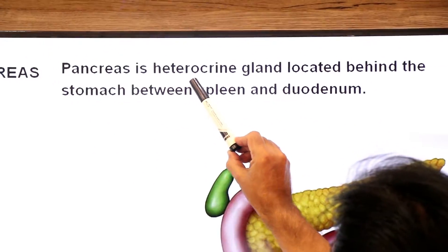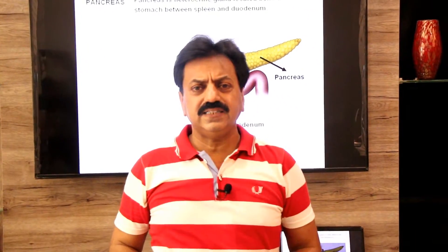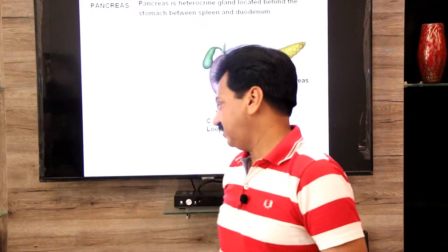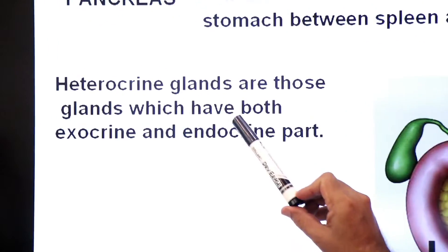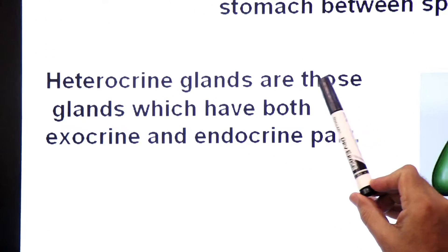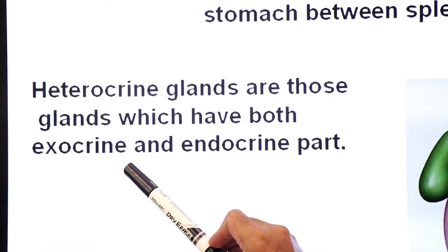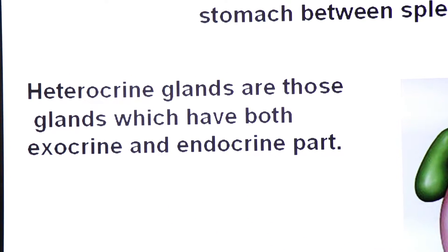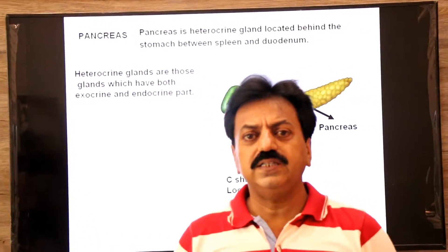It is a heterocrine gland. Heterocrine gland ek aisi gland ko kaha jata hai jiske doh parts hote hain — ek exocrine part aur doosra endocrine part. Heterocrine glands are those glands which have both an exocrine part with a duct and an endocrine part without a duct.